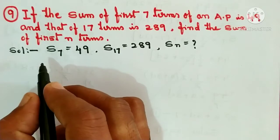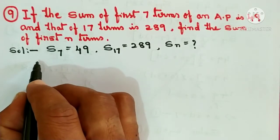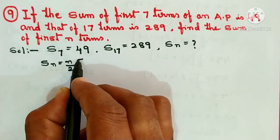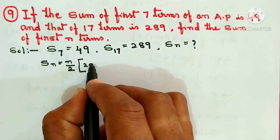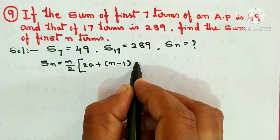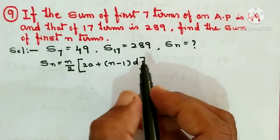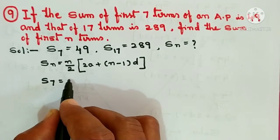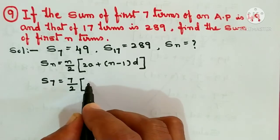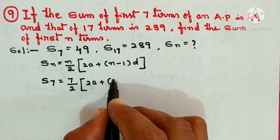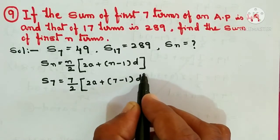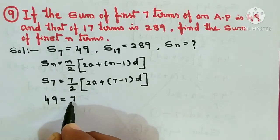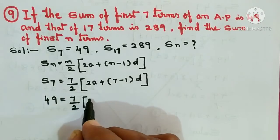Now here we have to use the formula: Sn is equal to n by 2, square bracket 2a plus n minus 1 into d. First we will take S7, so n value is 7. S7 is equal to 7 divided by 2, then 2a plus 7 minus 1 into d. S7 is given as 49, so 49 is equal to 7 by 2, square bracket 2a plus 7 minus 1 into d.